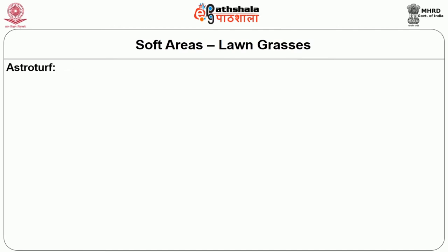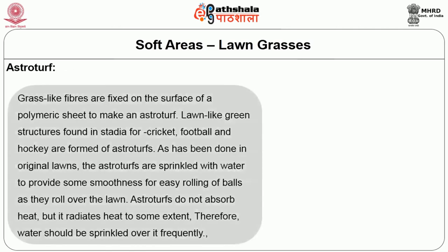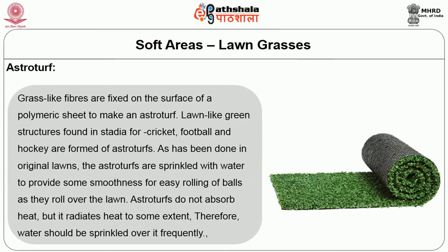Astro turf is a synthetic lawn made from synthetic fibres. Grass-like fibres are fixed on the surface of a polymeric base to make an astro turf. Lawn-like green structures found in stadia for cricket, football and hockey are formed of astro turfs. As with original lawns, astro turfs are sprinkled with water to provide smoothness for easy rolling of balls. Astro turfs do not absorb heat but radiate heat to some extent, so water should be sprinkled over them frequently.